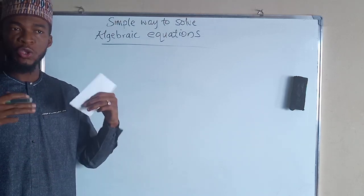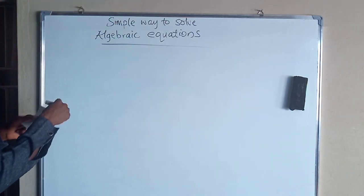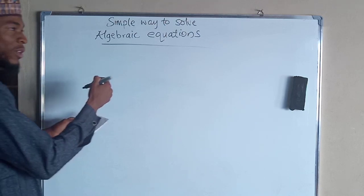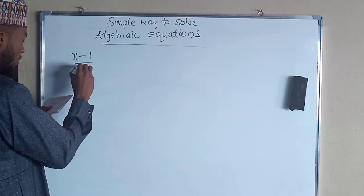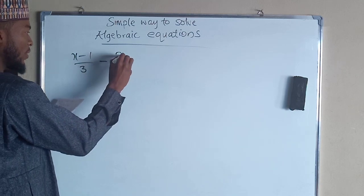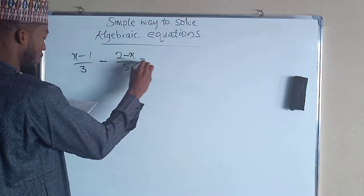It's not the only way but I mean it's the best way. So first you have an equation like this that says you should simplify x minus 1 divided by 3 minus 2 minus x divided by 5 equals 3.